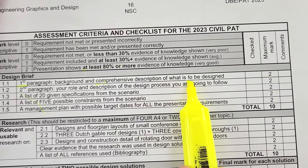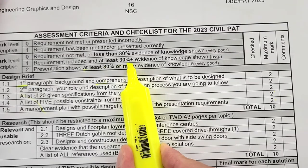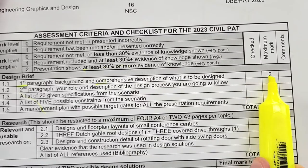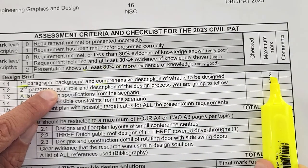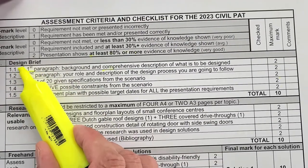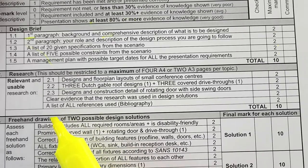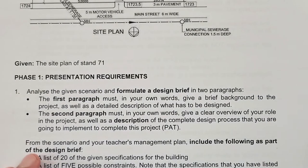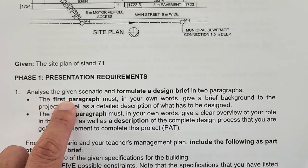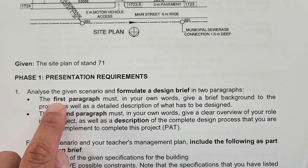If you only meet around 30% of the evidence — for instance you've written some background but it's not comprehensive — that's a one out of two. If you've almost not met the requirement at all, you can get zero out of two. This checklist details every part including the research section and it lines up directly with page 12 of your PAT document, which tells you exactly what's required for each paragraph.